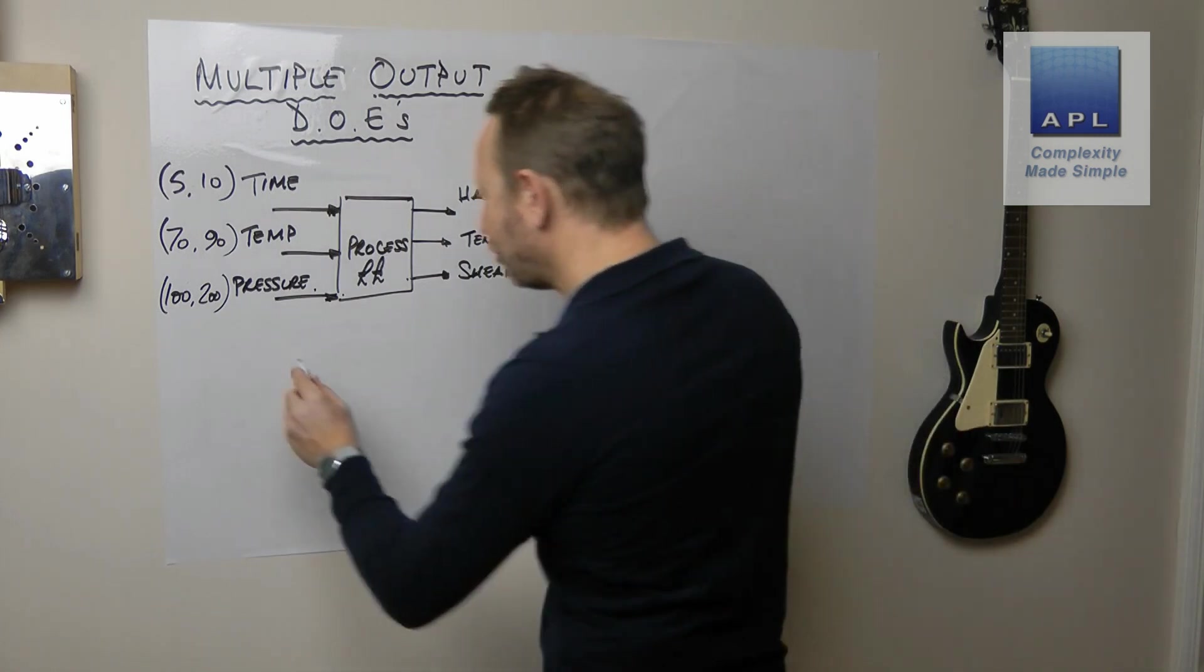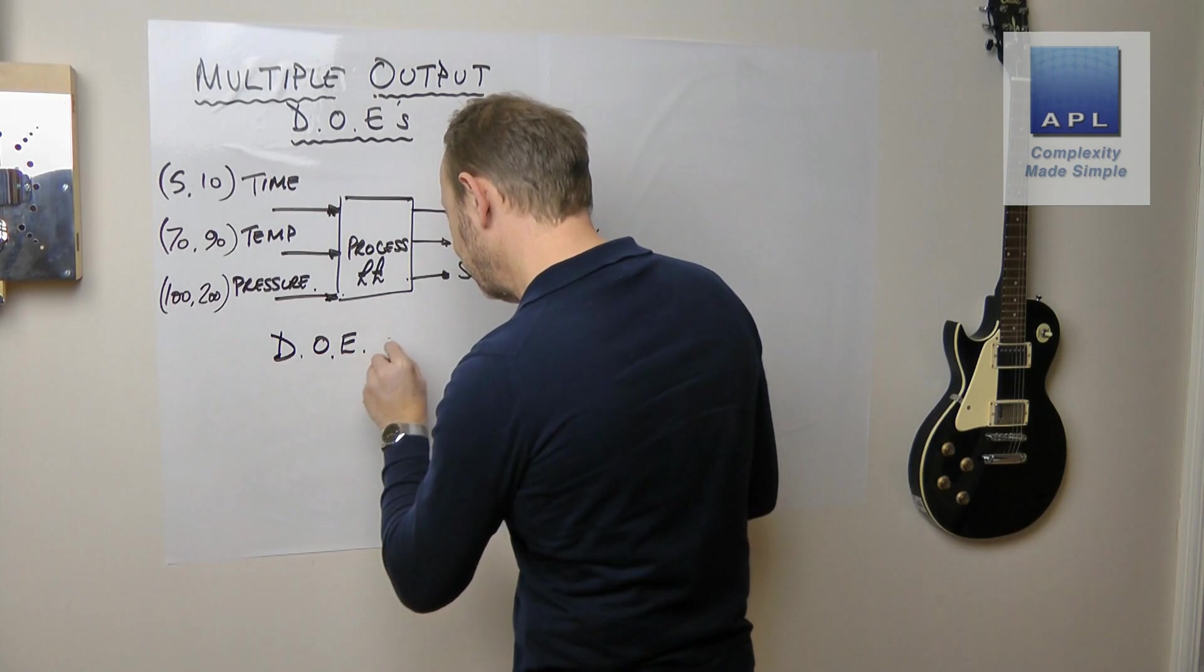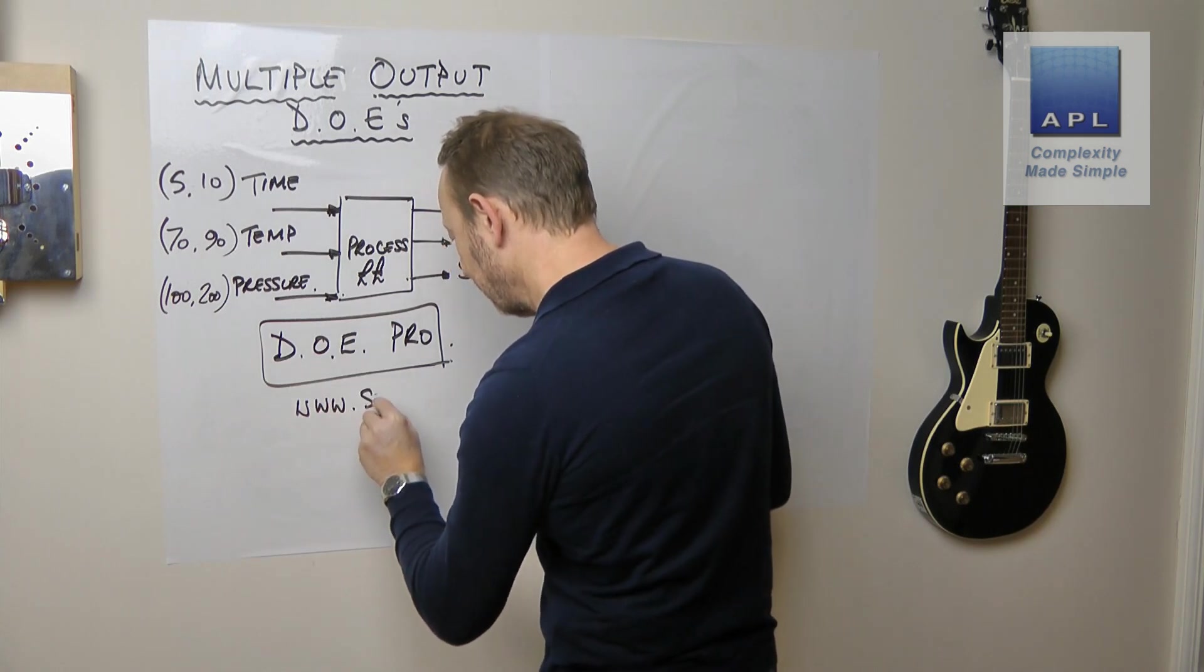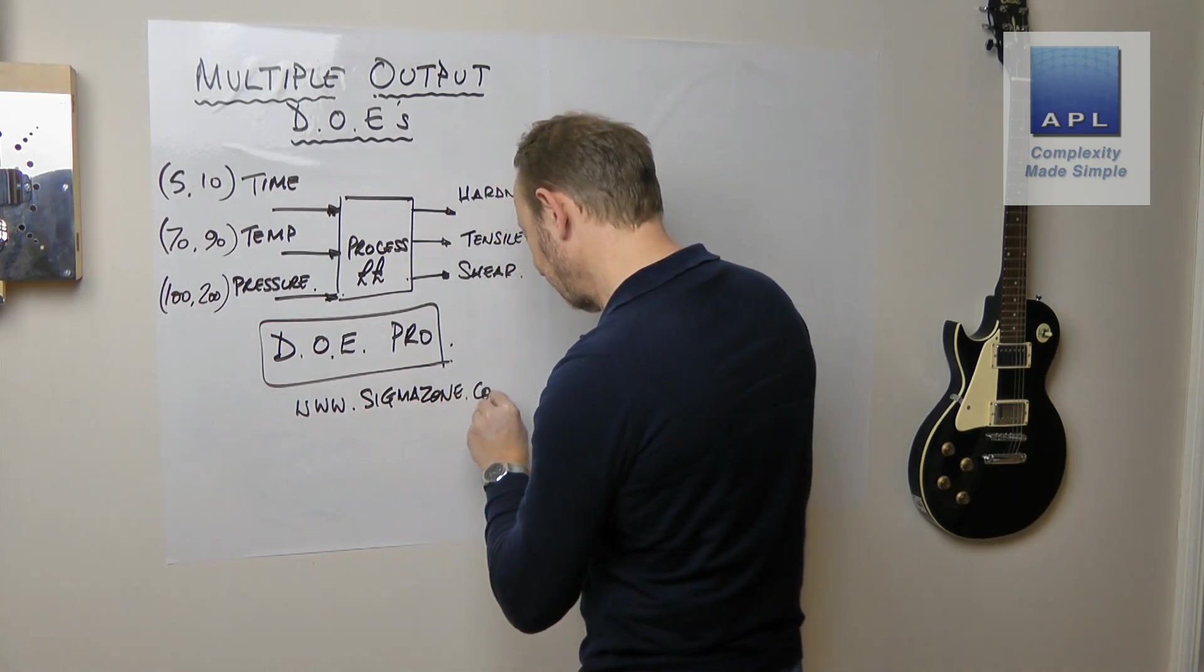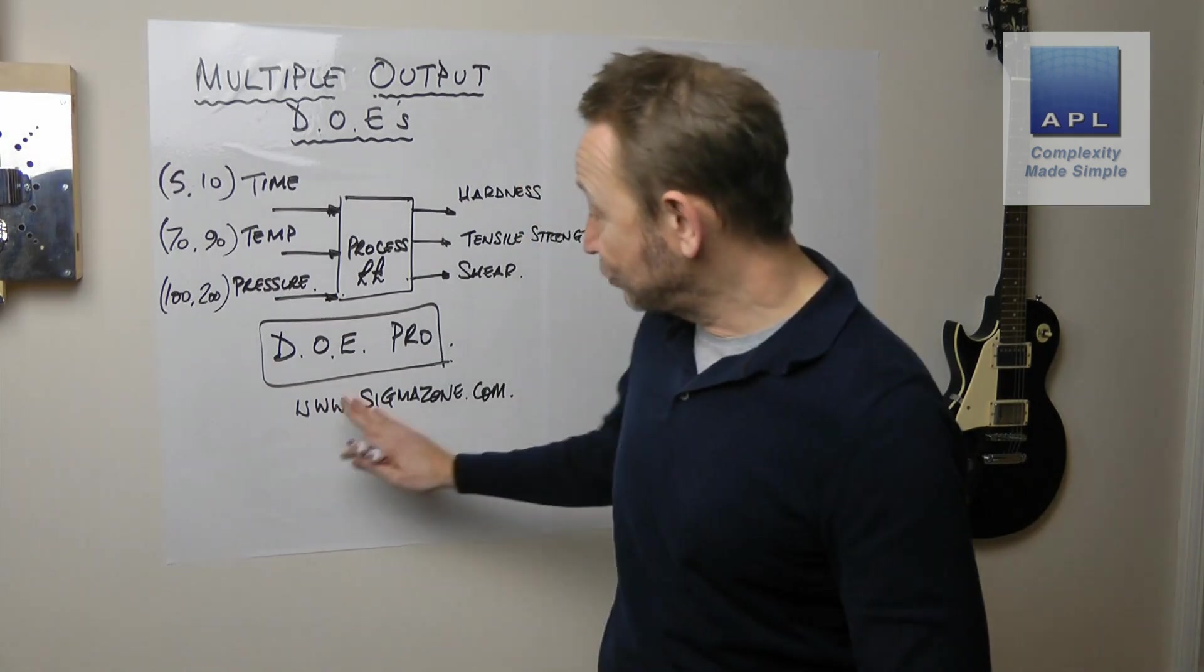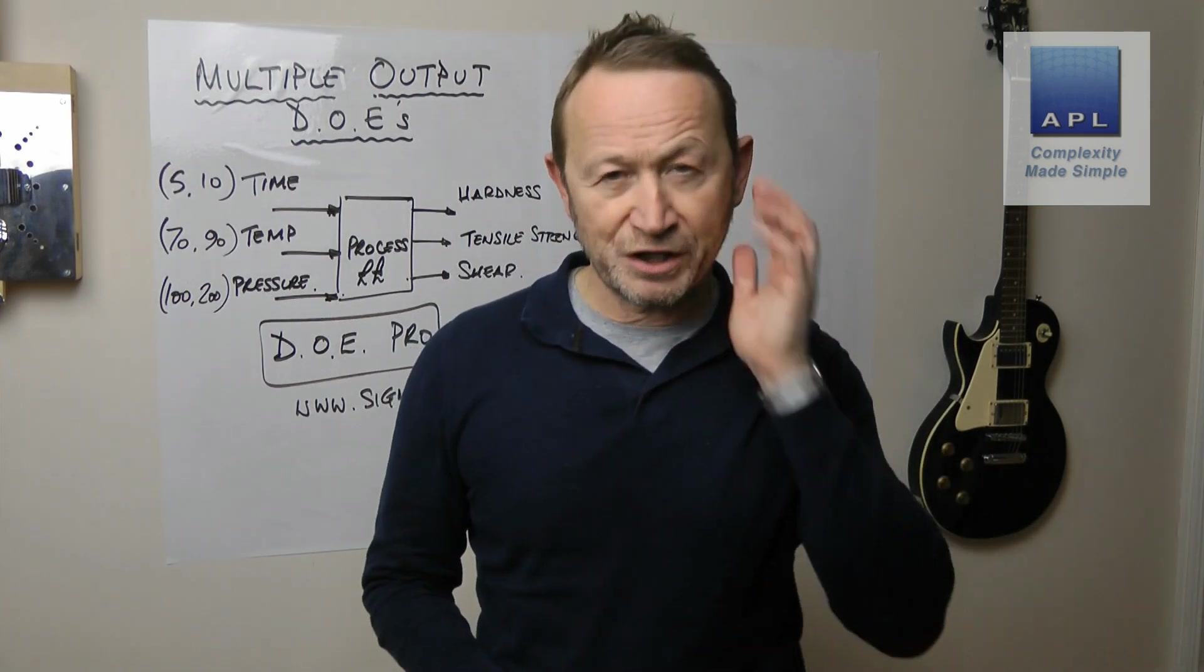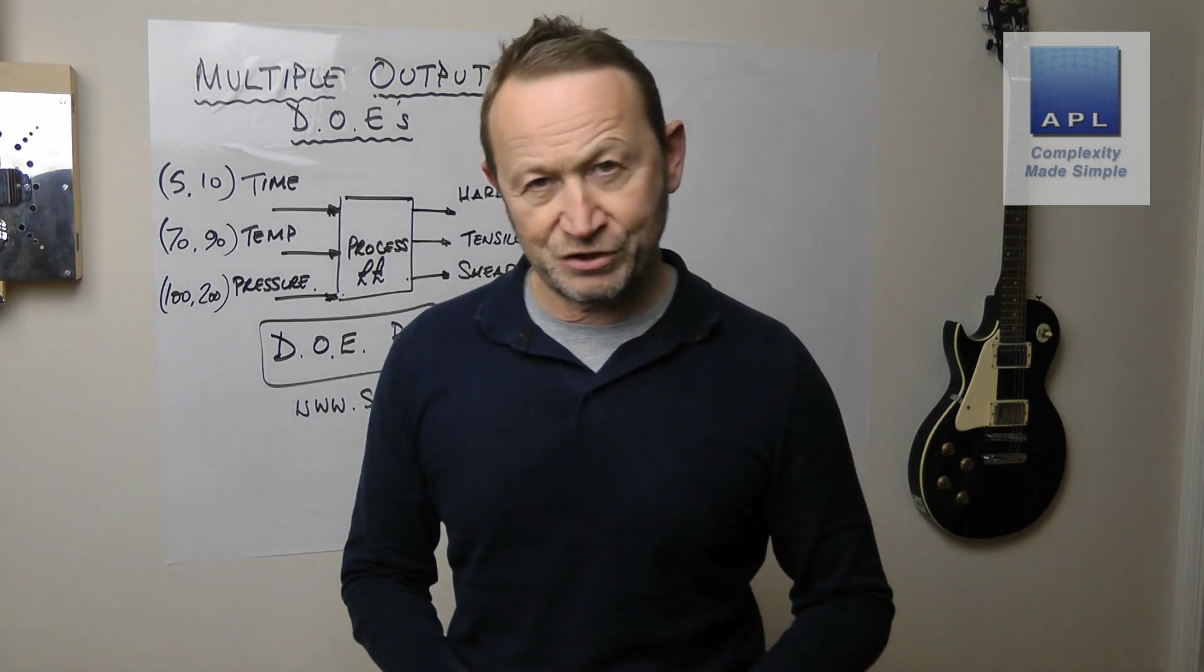Now Sadiq, the software that I use is DOE Pro. That's the software I'm using. You can get it from SigmaZone.com. You can actually get a free five day license if you want to just drop it on your computer and have a little play around with it. DOE Pro is what I use, and so what I'm going to show you is how DOE Pro does this.